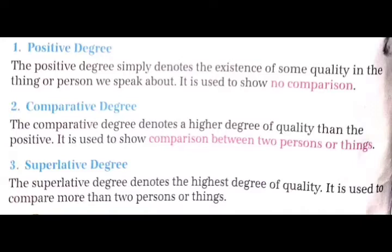Second is comparative degree. The comparative degree denotes a higher degree of quality than the positive. Comparative degree positive से quality की ऊची degree को बताता है. It is used to show comparison between two persons and things. इसका use दो persons या things के बीच comparison को show करने के लिए किया जाता है.